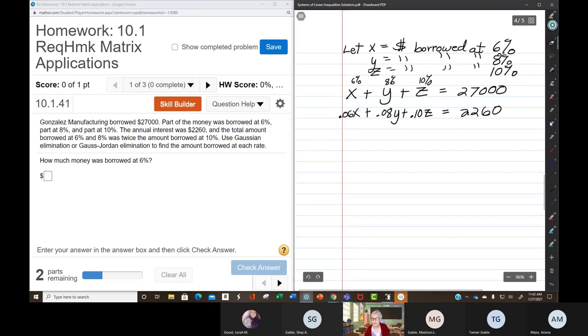Now we're told one more thing. The total amount borrowed at 6% and 8% was twice the amount borrowed at 10%.